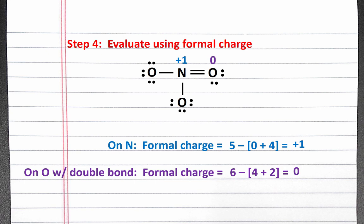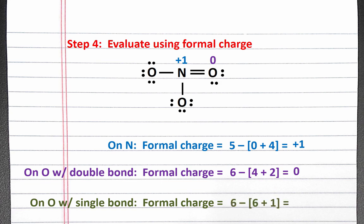Last, we'll calculate the formal charge on the other two oxygen atoms, which each have just one single bond. A neutral oxygen atom has six valence electrons. There are six lone pair electrons on each of these oxygen atoms and there is one bond. So we have six, subtract one, and six. The formal charge on each of these oxygen atoms is negative one.